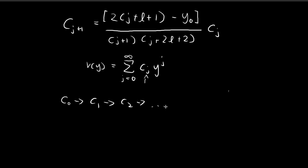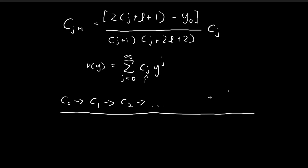It seems like we're done, but we're actually not. If we allow this sequence of coefficients to keep generating newer terms all the way to infinity, the resulting v(y) will not be normalizable. If the coefficients keep going, this function will behave in an exponential way, which is not normalizable.